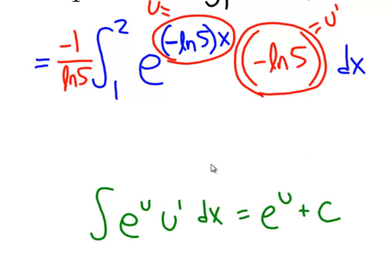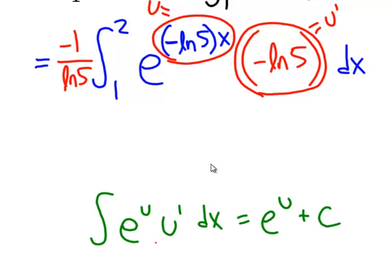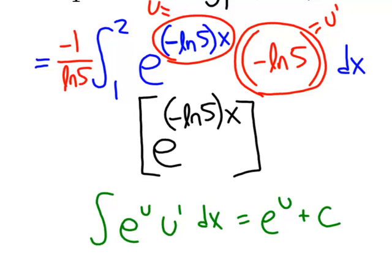So, this is the part where we anti-derive, and the U prime goes away in the anti-deriving process. And we get E to the U power. And since this is a definite integral, we won't put plus C. We'll put the brackets and then the limits of integration instead, and of course, that constant out front.